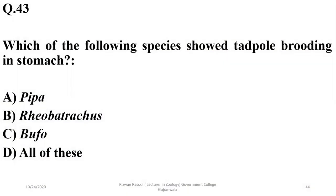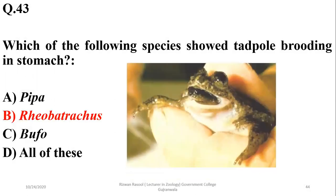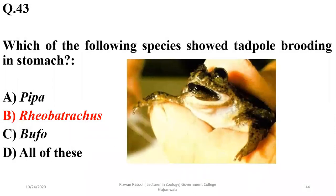Which of the following species showed tadpole brooding in the stomach? It was Rheobatrachus, now considered an extinct species. It used to brood larvae from tadpoles in the stomach and would stop producing gastric juice while they were in the stomach to prevent their digestion.